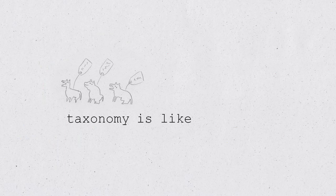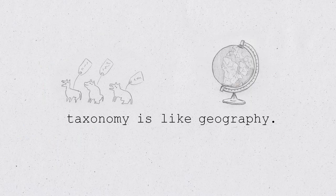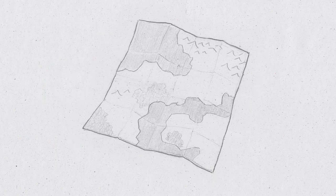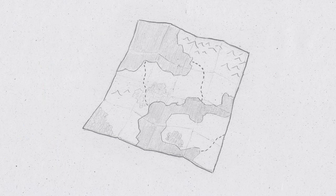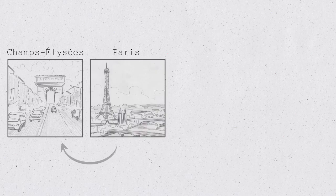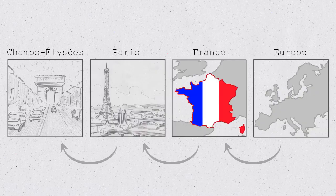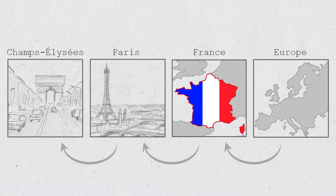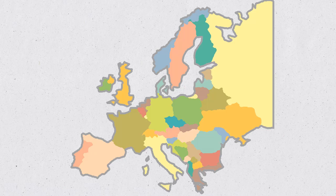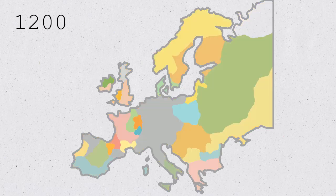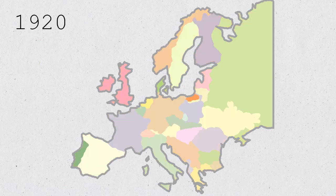Taxonomy is like geography. In geography, we understand the world we live in by dividing it up into bits and giving those bits names. Champs-Élysées is a street in Paris, which is a city in France, which is a country in Europe. These names and divisions within divisions are, in one sense, arbitrary. You could take Europe and split it up into any number of different divisions and subdivisions with different names. And, indeed, we have done that, time and time again throughout history.